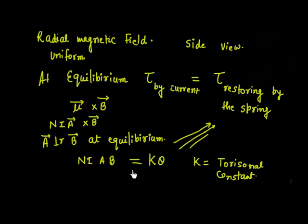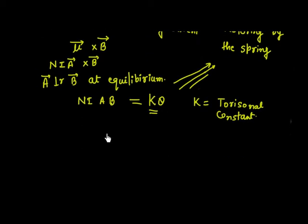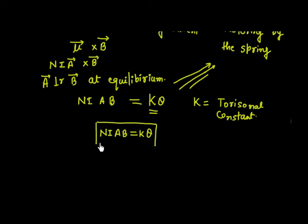So the torque is N·I·A·B. Now, torque due to the spring is proportional to theta, so I can write K·θ, where K is the torsional constant of the spring. So a torsional spring, unlike a linear spring which resists elongation or compression, resists rotation. So this is the equation for the moving coil galvanometer: N·I·A·B = K·θ, where K is the spring constant and θ is the angle at equilibrium.